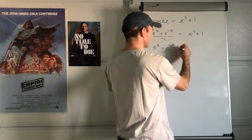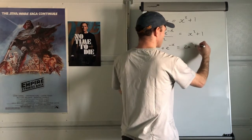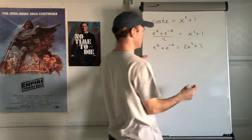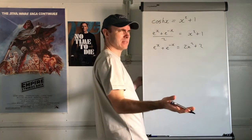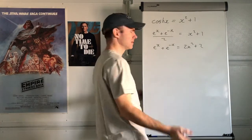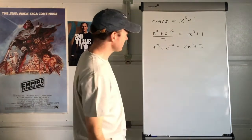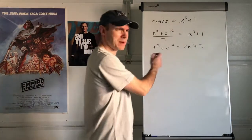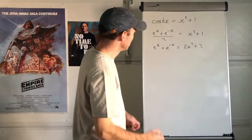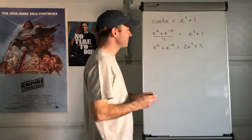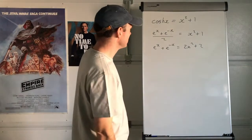So e to the x plus e to the negative x equals 2x squared plus 2. How do we solve that? No matter how hard you try, it's not going to be an easy one to solve. Some sort of numerical methods could be needed.